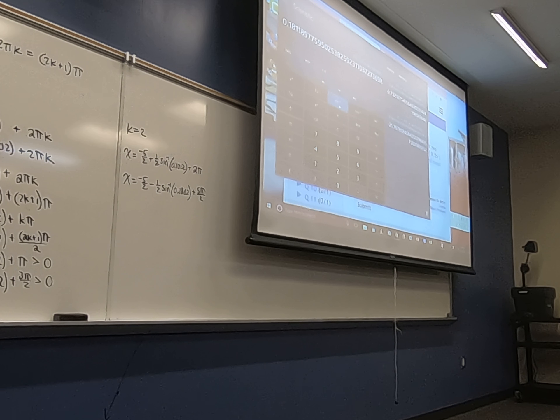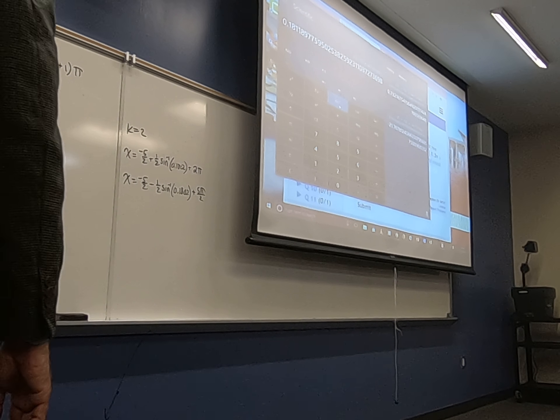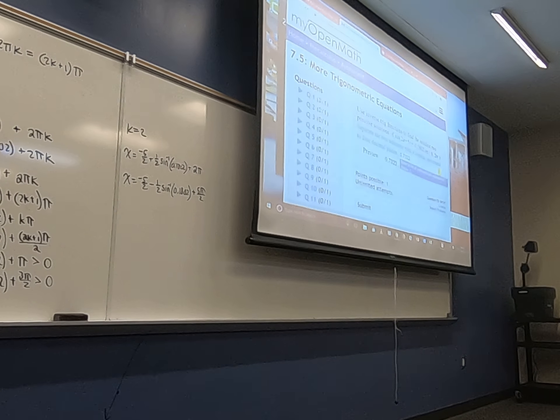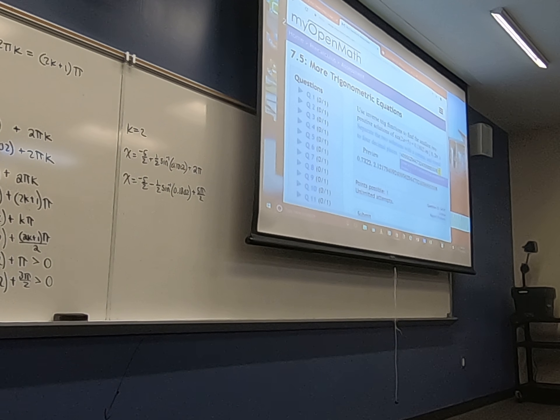Now we're going to add 3π over 2, right? Give me the second one here. So plus 3 times π divided by 2. Copy that, paste it in here, and delete what we don't need.